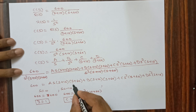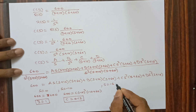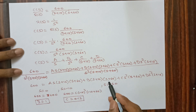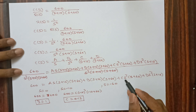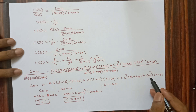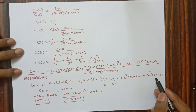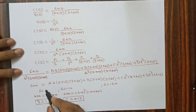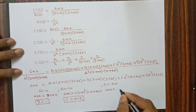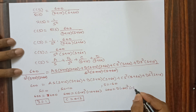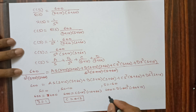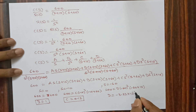Then, setting s = -60: the A, B, and C terms become zero, leaving 600 = D × (-60)² × (-60+10) = D × 3600 × (-50). Solving gives D = -3.33 × 10⁻³.